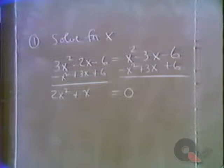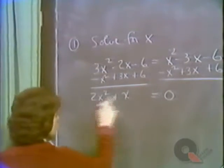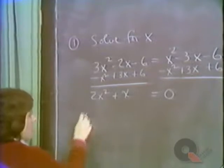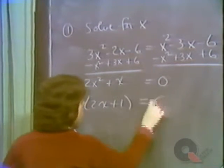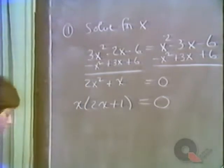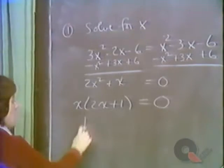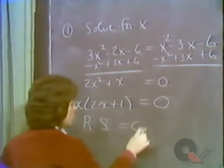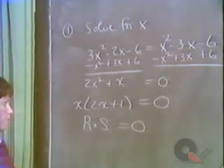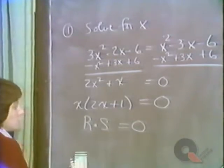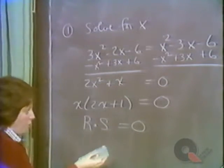We have the simplest type of quadratic equation to solve by factoring — one in which the constant term is missing. Since there is no constant term, we can simply take out an x as a common factor, giving us x times 2x plus 1 equals zero. After factoring, the idea is to use the zero product property: if r times s equals zero, this implies that either r equals zero or s equals zero, possibly both.